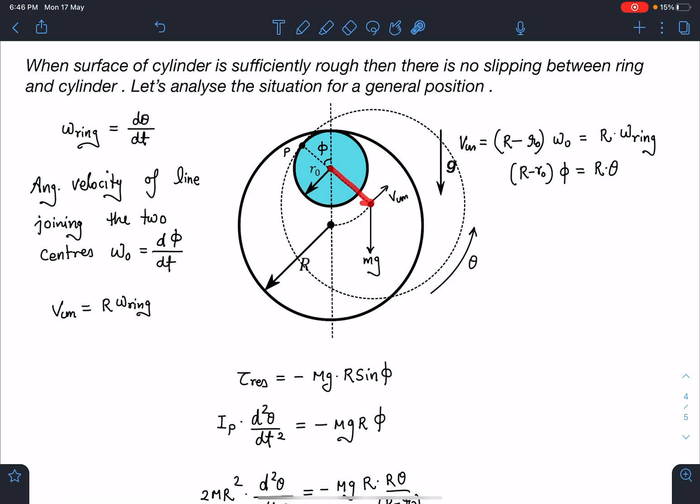So this is going to be VCM value, that is (R - R0)ω0. And if this ring in the same time when the line joining rotates by φ, the ring rotates by an angle of θ, then I can write dθ/dt is going to be the ω of ring angular velocity of the ring. And now we can apply condition of no slipping at point P here. So you can see this velocity is VCM in this direction and here it is capital R ωring.